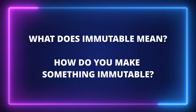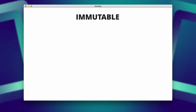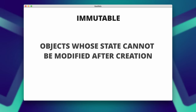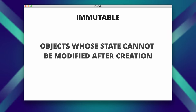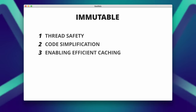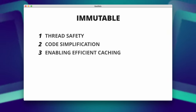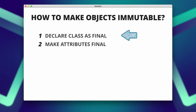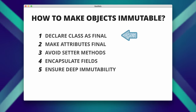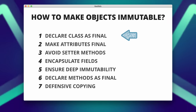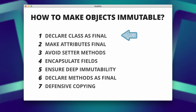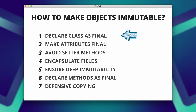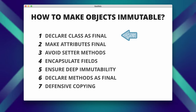What does immutable mean and how do you make something immutable? In Java, immutable refers to objects whose state cannot be modified after they are created. Immutable objects are useful for thread safety, simplifying code, and enabling efficient caching. To create immutable Java objects: declare the class as final to prevent subclassing and overriding methods that could modify the object's state. When a class is final, it cannot be subclassed or extended. Declaring a class as final implicitly means that all methods are final as well.